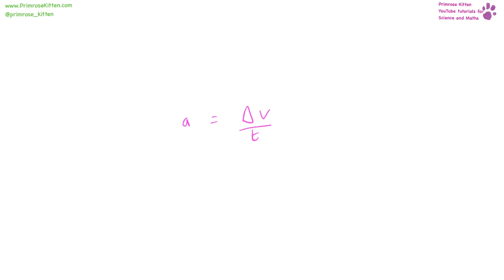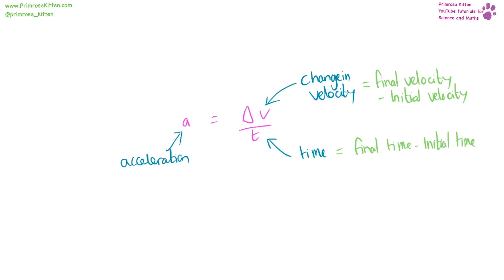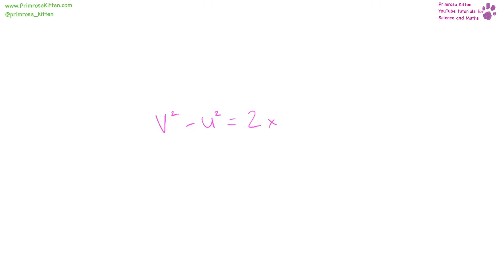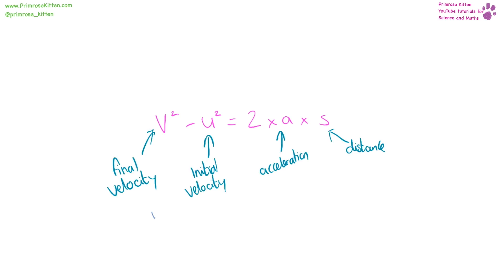Acceleration is equal to the change in velocity over time. We can work out the change in velocity by taking the final velocity minus the initial velocity, and the change in time by taking the final time minus the initial time. Acceleration is in metres per second squared, velocity in metres per second, and time in seconds. Final velocity squared minus initial velocity squared equals two times acceleration times distance.